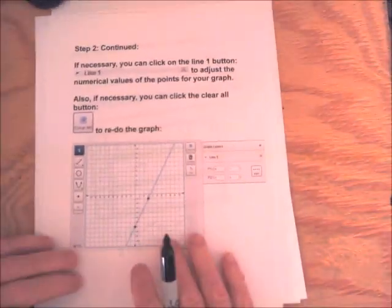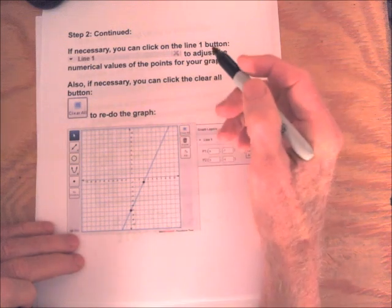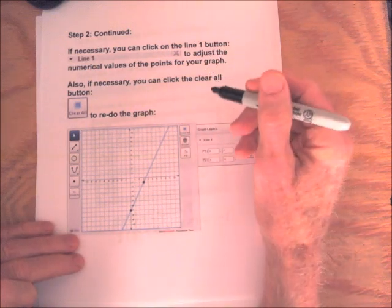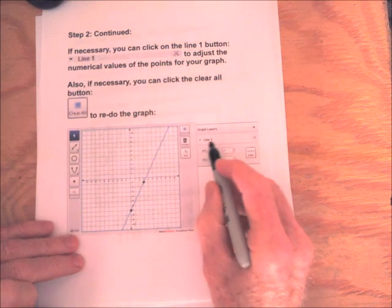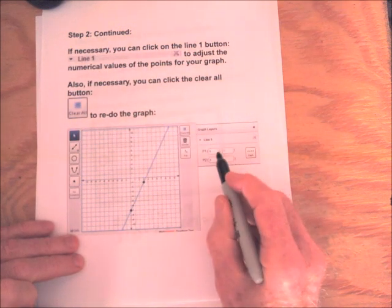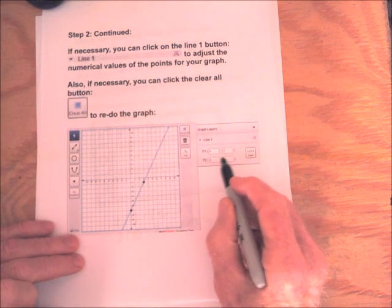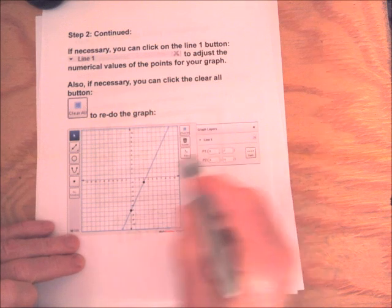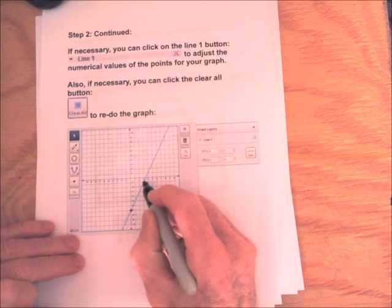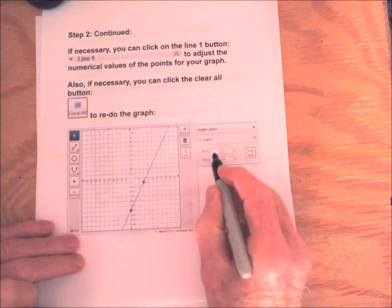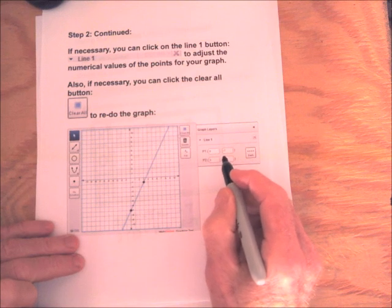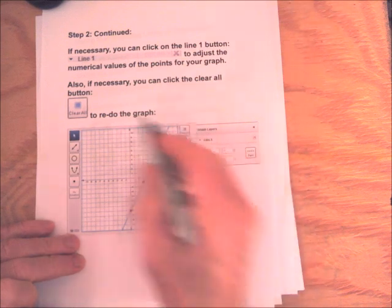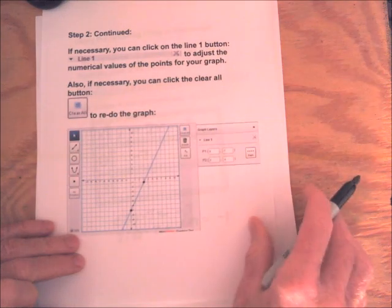Okay, and if you need to redo the graph, you have a couple options. If you click on where it says Line 1 on the side, you can actually enter the points manually in case it's difficult to do it with the mouse. You can enter them numerically. Or if you want to just redo the graph, you can click Clear All to redo the graph.